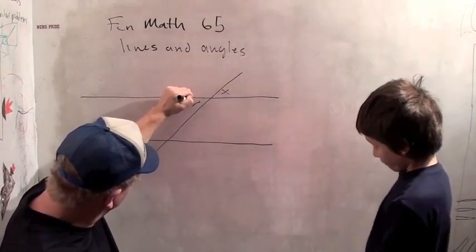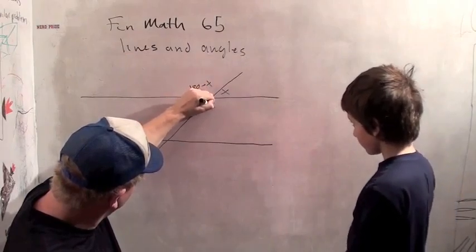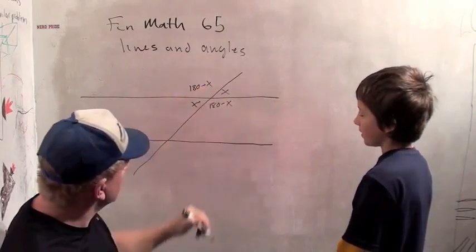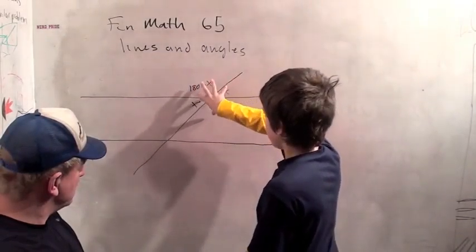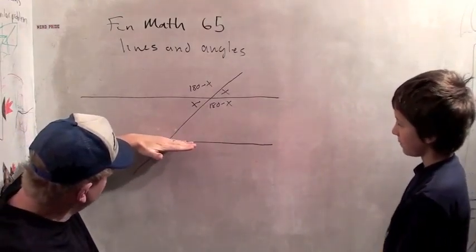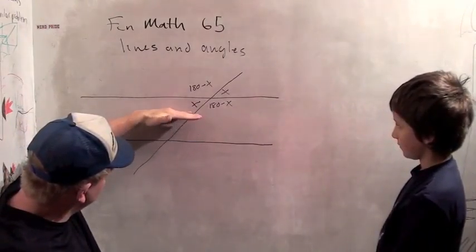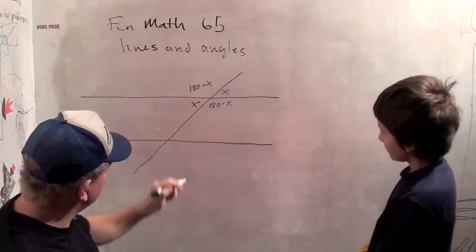So, we already learned about, we just learned just now about these angles. If that's x, this is x, x, and 180 minus x. But, if you slide this down, this over here becomes this. Right, because they're parallel, I can just slide this angle up here. And I get exactly the same angles.